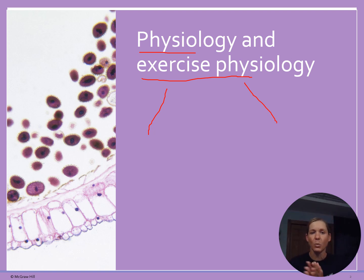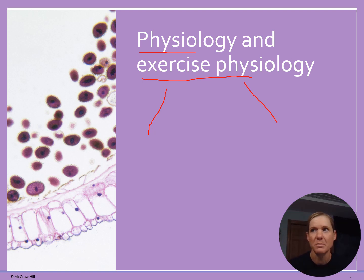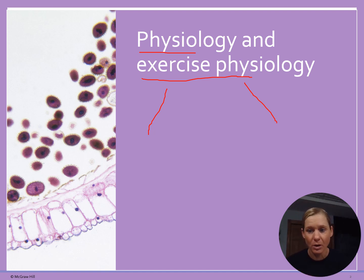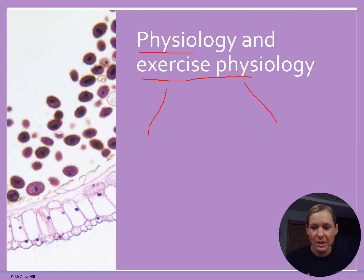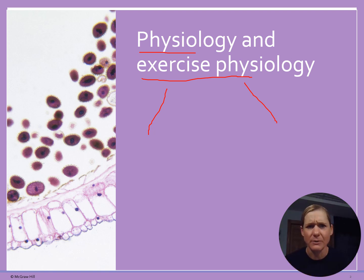Acute exercise looks at what happens during one singular exercise bout. For example, if I go outside and go for a run, some of the changes that happen within my body include my heart rate increasing, sweating more, increasing breathing frequency, increasing blood flow to my muscles, increasing metabolic activity in those muscles, and having feel-good hormones released. Those are some examples of what's happening in an acute exercise bout.